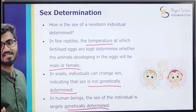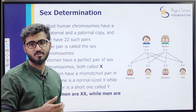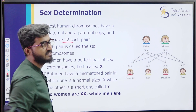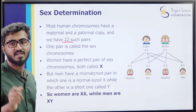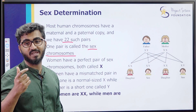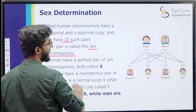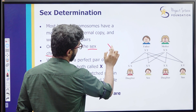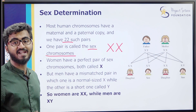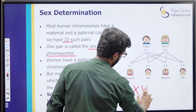How is sex genetically determined in humans? In human beings, we have both maternal and paternal chromosomes. We usually have 22 such pairs, and one pair is called the sex chromosomes. In females it is a perfect pair - homogeneous - and both are called X. So women have XX - homogeneous.